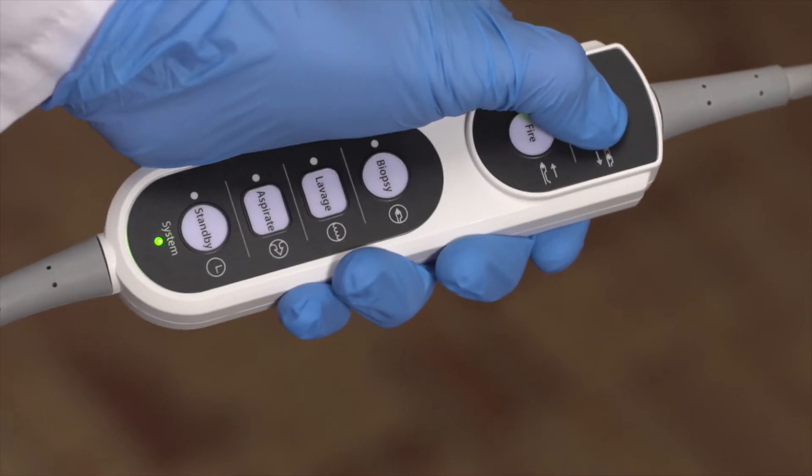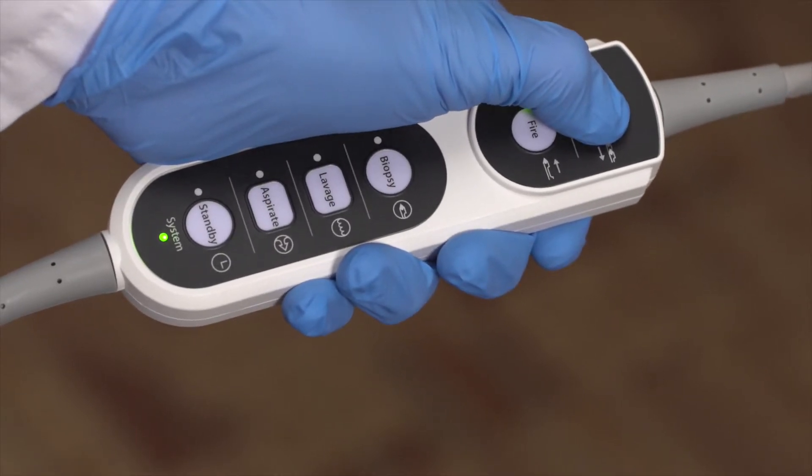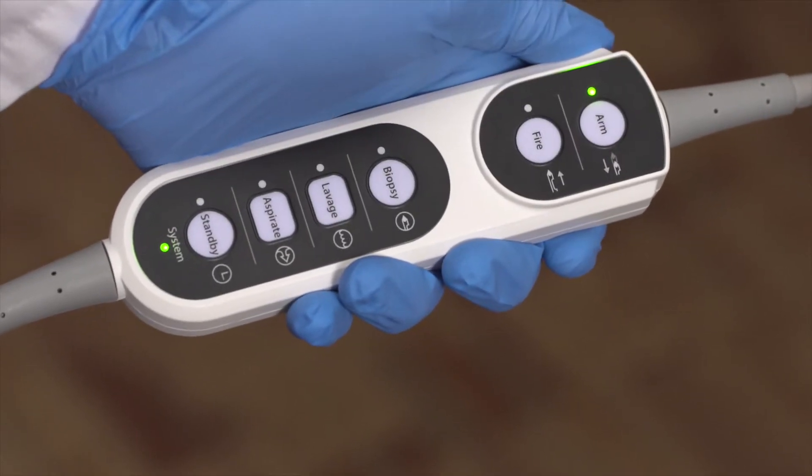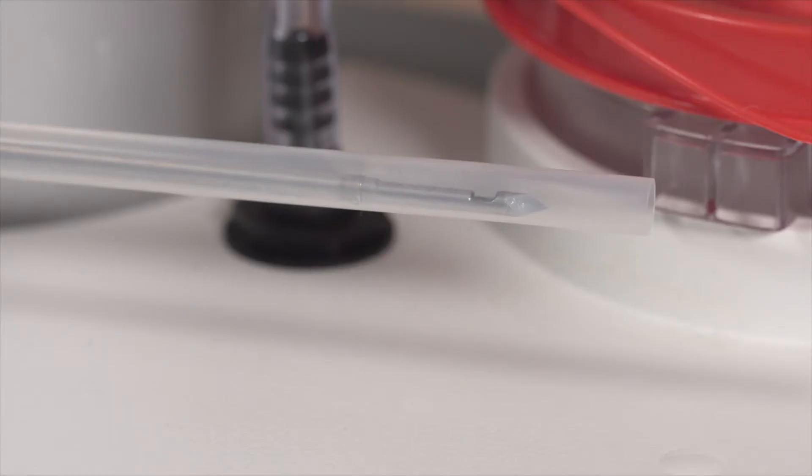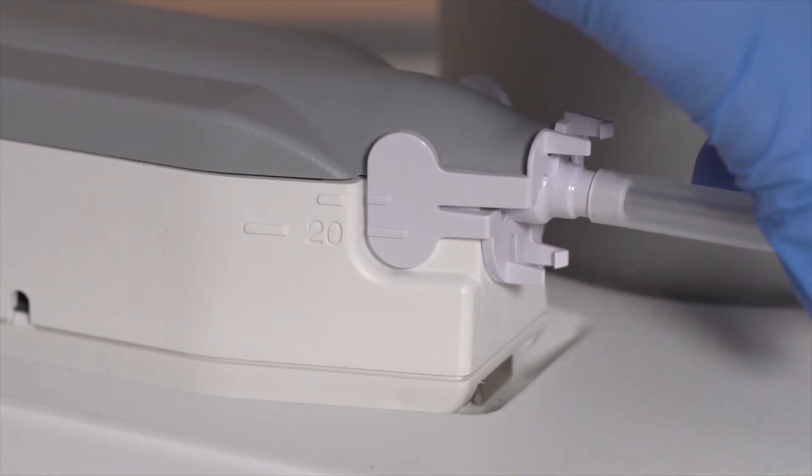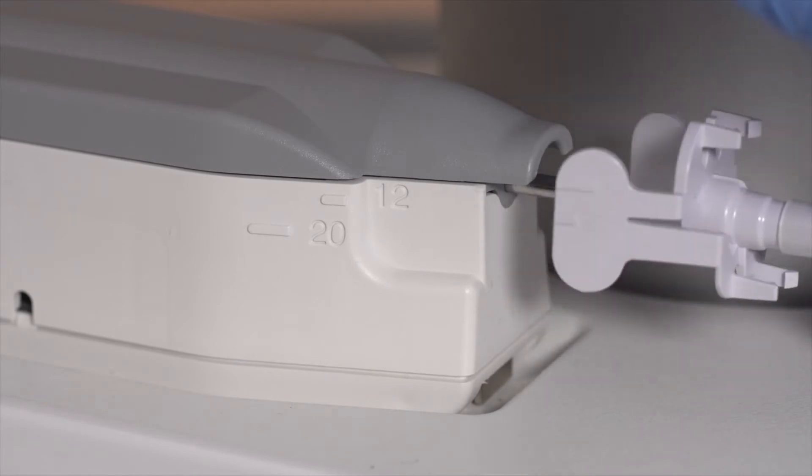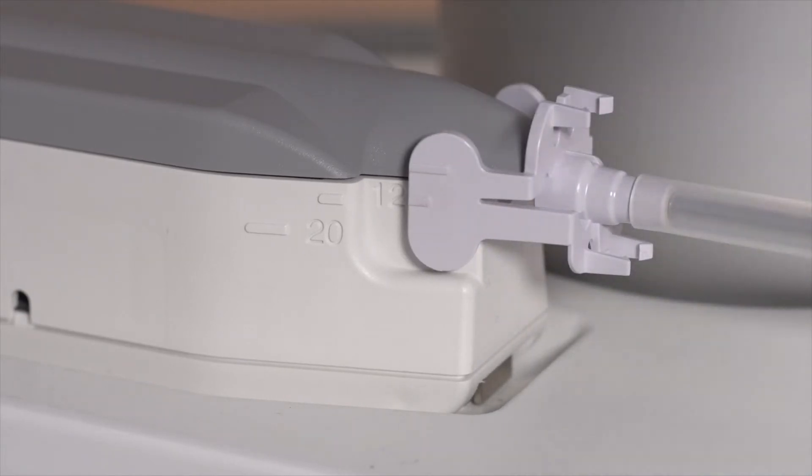The biopsy device should always be armed before placing on the imaging guidance system. Arming the device sets the appropriate firing stroke: 23mm stroke for standard and 15mm stroke for petite. If the position of the sheath is changed to change the aperture setting, remember to fire and rearm the device so the correct stroke is realized.